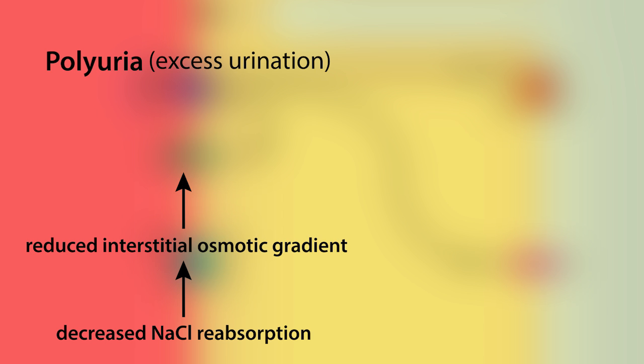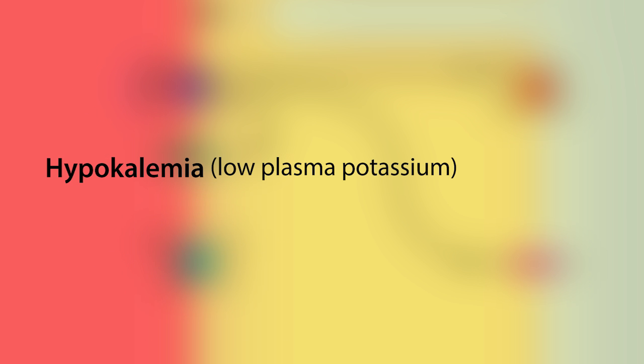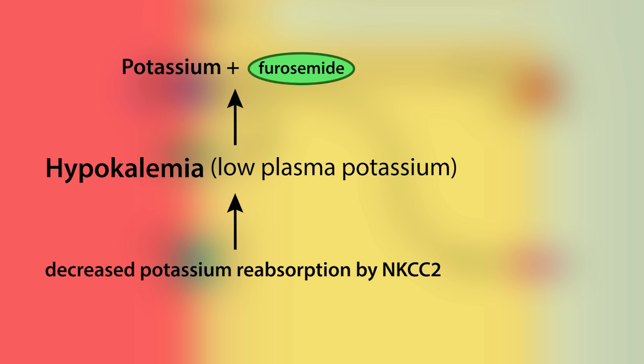Polyuria, or excess urination, occurs because the decreased sodium reabsorption reduces the interstitial osmotic gradient required for water reabsorption, which is a contributing factor in the associated low blood pressure. Hypokalemia, or low plasma potassium, occurs because of decreased potassium reabsorption by the NKCC2 cotransporter. Because of this, potassium supplements are commonly administered alongside furosemide.